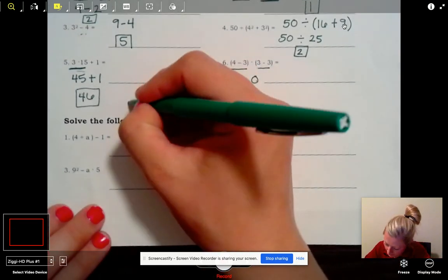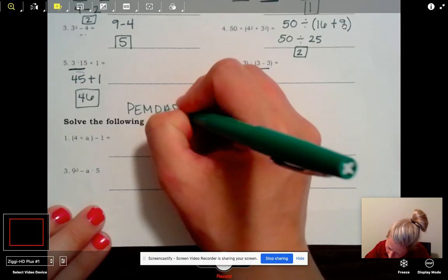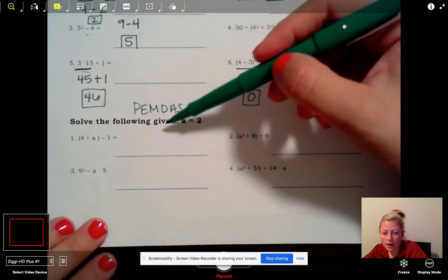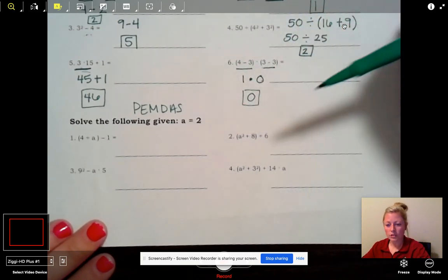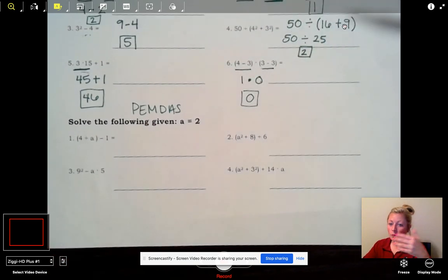This time it says solve the following given A equals 2. So before we can do what we were just doing, we're going to add one step and plug in 2 every time we see an A. We call it substitution if you remember that.